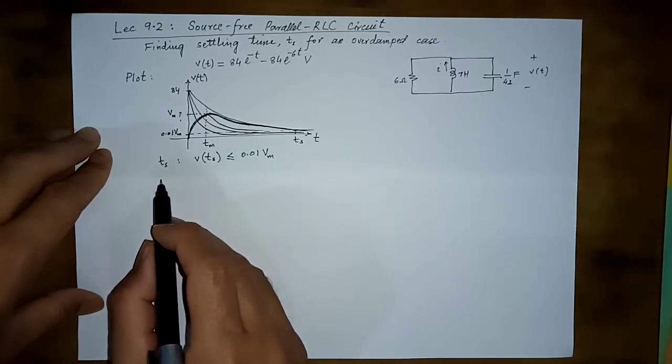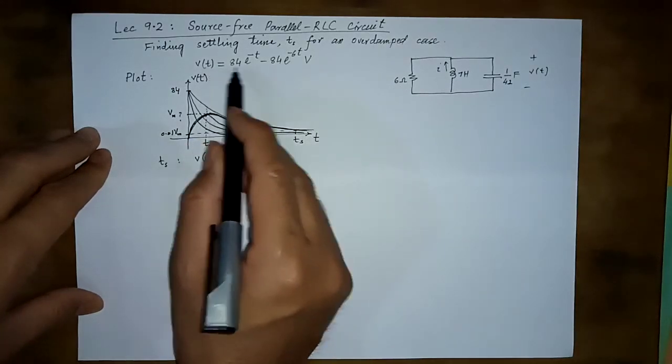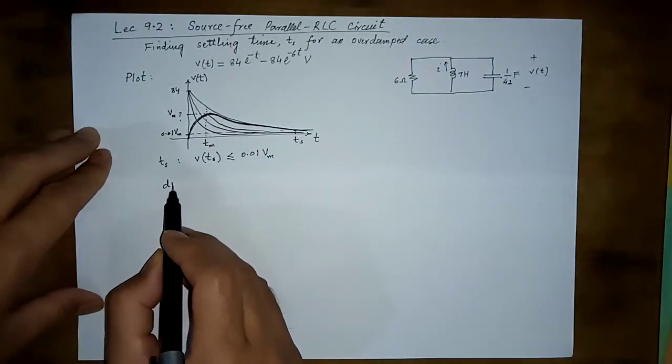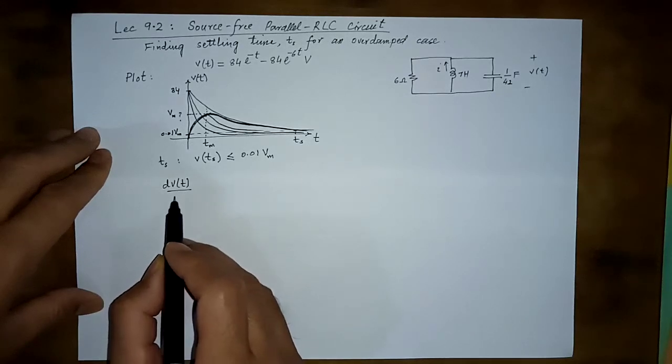If we take the derivative of this thing, if we take the derivative of a function and equate the derivative to zero,